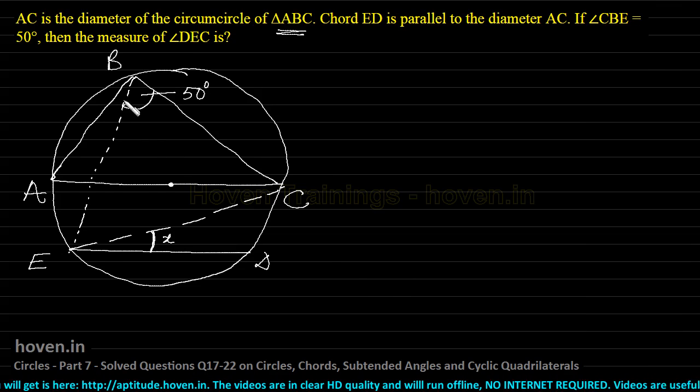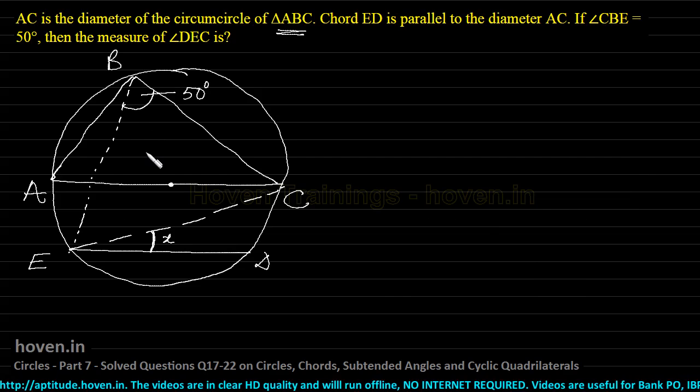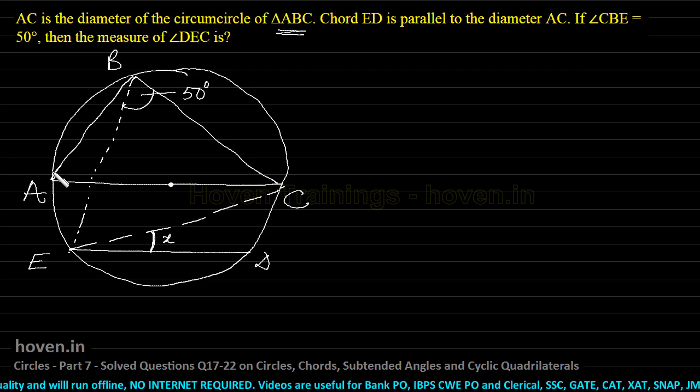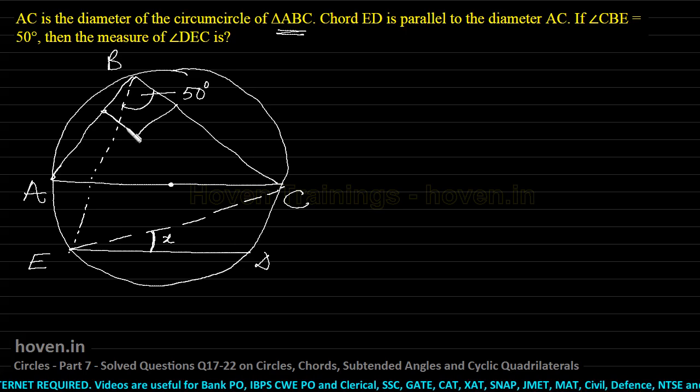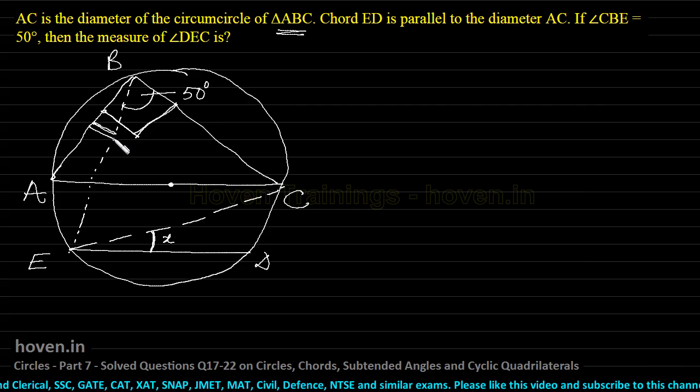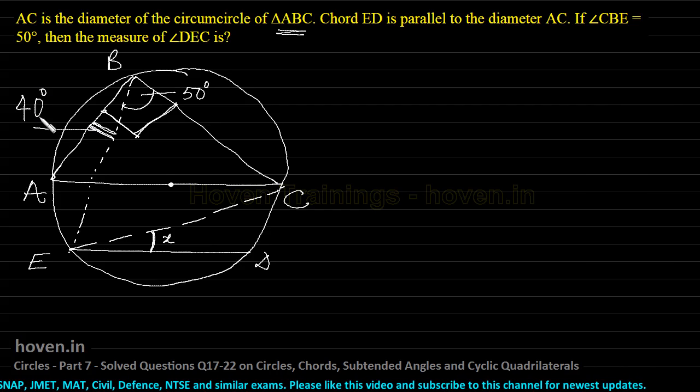Let us start with triangle ABC. AC is the diameter, B is a point on the circle. Therefore, angle ABC is an angle in a semicircle. This entire angle is going to be 90 degrees. If this is 90 degrees and this portion is 50 degrees, then this angle is going to be 40 degrees. 40 plus 50 will complete 90.